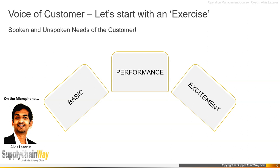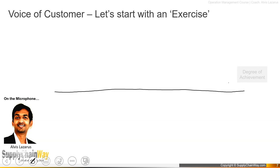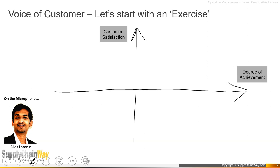Now we are going to plot these in a small graph. On the x-axis, you have the degree of achievement — how well you have achieved that attribute. On the y-axis, you have the satisfaction of the customer. Let's first talk about the basic needs. If the organization has not provided the basic requirement — like a seat or a stand — that will lead to great dissatisfaction, so satisfaction is at its lowest. But if all basic requirements are provided, satisfaction rises to a neutral level.